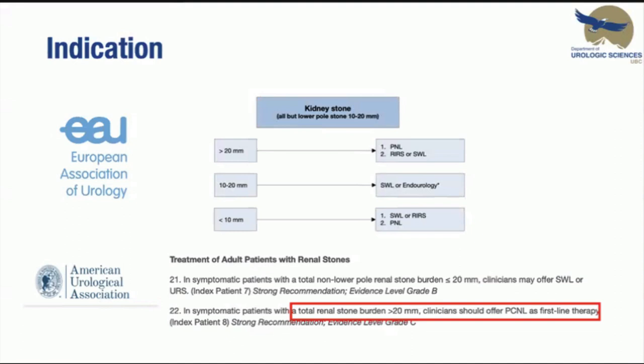When it comes to indications for percutaneous nephrolithotomy, the American Urological Association strongly recommends PCNL as first-line therapy in symptomatic patients with total renal stone burden more than 20 mm, because of higher stone-free rate and less invasive technique compared to open, laparoscopic, or robotic approaches. The European Association of Urology also recommends PCNL as first-line treatment for stones more than 20 mm and as an alternative for stones between 10 to 20 mm.